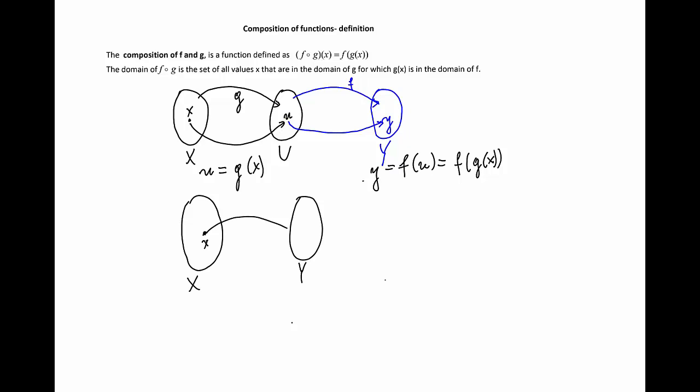we assign one and only one element of Y such that y equals f of g of x. That new function that we form by omitting the middle set U is called the composition of two functions and denoted f circle g.